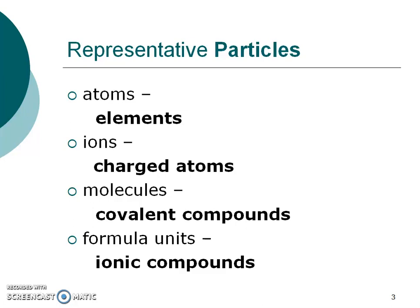However, the word 'particle' is never going to be seen. So what does an atom really mean? What does an ion really mean? Well, an atom really means elements. Ions really means that something is charged. A molecule is those molecular or covalent compounds, and a formula unit is an ionic compound.